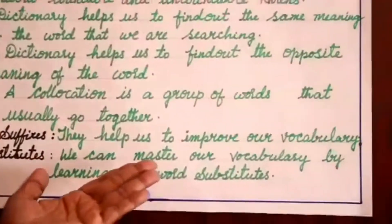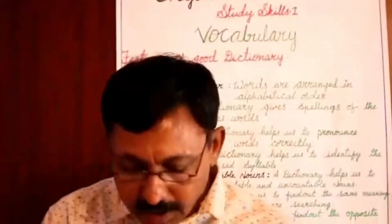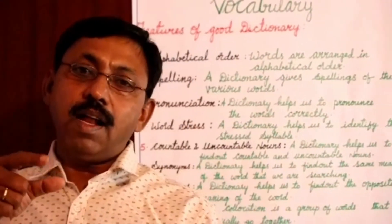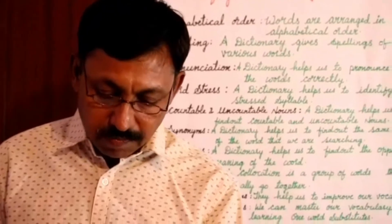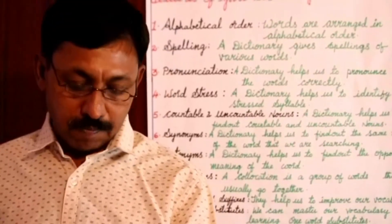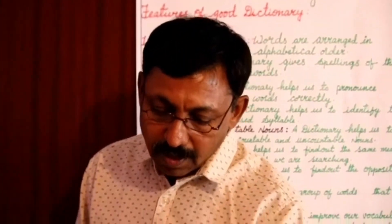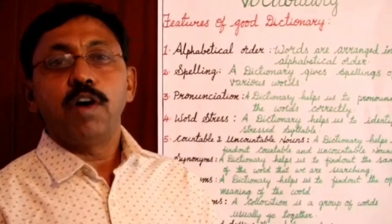Then, one word substitutes. We can master our vocabulary by learning one word substitutes, which mainly help us to speak with a full meaning. For example, 'agenda' — a single word meaning 'a list of things to be discussed at a meeting.' And 'ambidextrous' means 'able to use both hands equally well.'